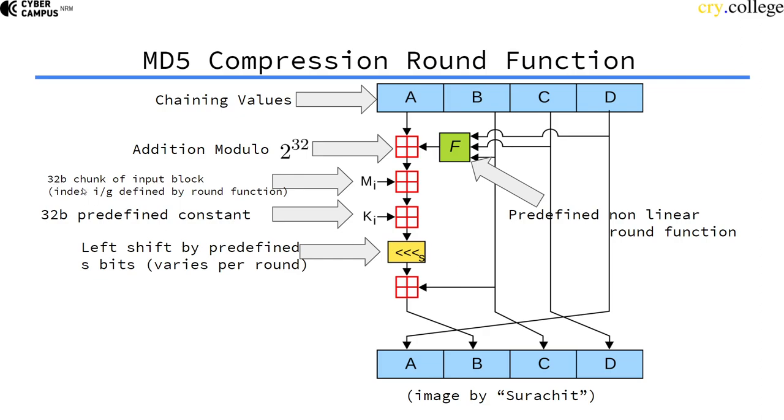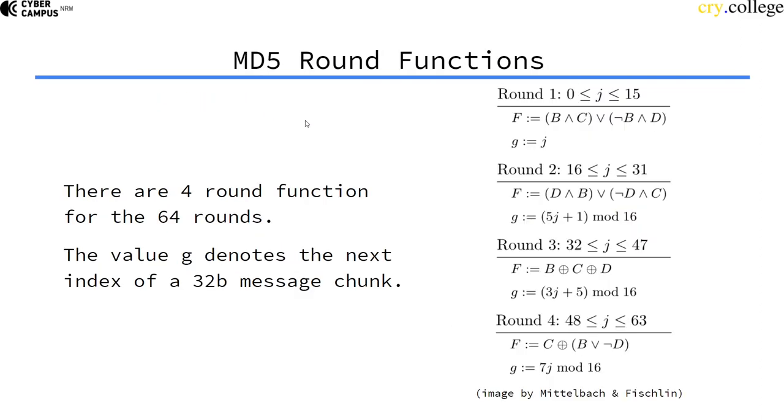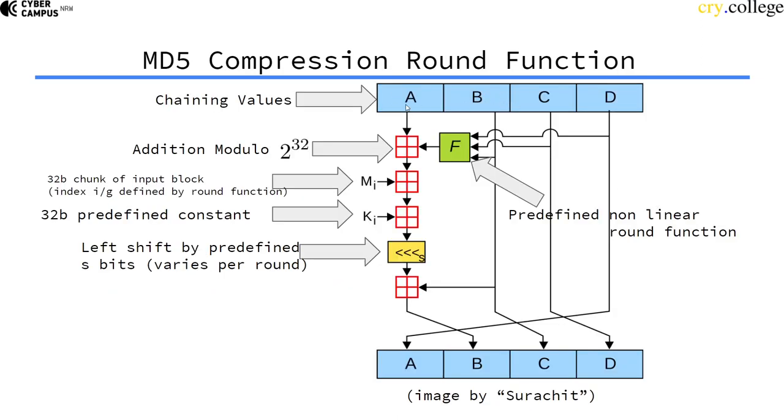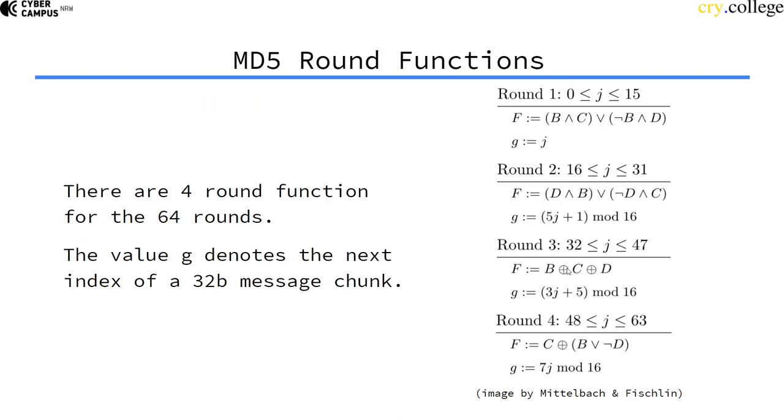There are four different round functions for the 64 rounds, and they look like this. You don't have to worry too much about those—those are nonlinear functions that just truly scramble the input and hash it around. And g here is the next index of the input message block.